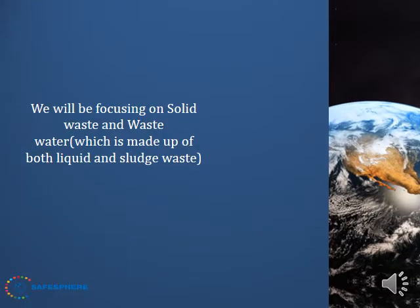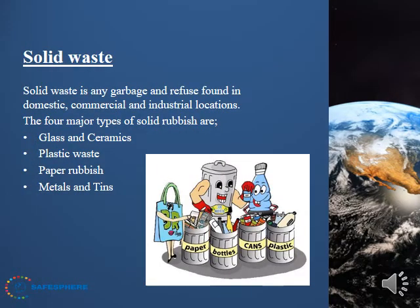We're focusing on solid waste and wastewater, which is made up of both liquid and sludge waste. Solid waste is any garbage and refuse found in domestic, commercial, and industrial locations. The four major types of solid rubbish are ceramics, plastic waste, paper rubbish, and metals and tins.